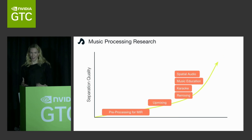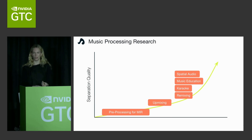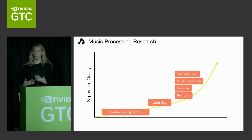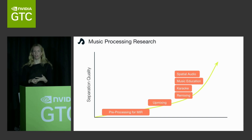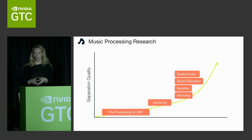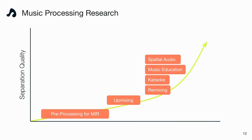Looking at the trajectory over the past few years: stem separation started powering backend or metadata-type tasks and is now moving closer to the listener. Today you have spatial audio or immersive audio — think Dolby Atmos, Sony 360, essentially surround sound — powered by stems, because you need to place sound objects in different perceptual fields. There's also music education like playing along with the band, isolating a guitar, or karaoke. Apple Sing, for example, uses source separation so you can sing along to the instrumental. And of course, remixing.